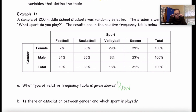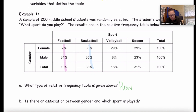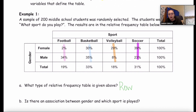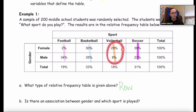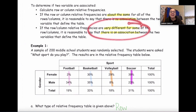Even though it is a row relative frequency table, we don't want to look across — we want to look down. So looking straight down, we want to know: are these percentages the same or close to the same? For football, they're pretty different. For volleyball, pretty different. For soccer, kind of different. So we would say they're very different, which means we say there is an association.